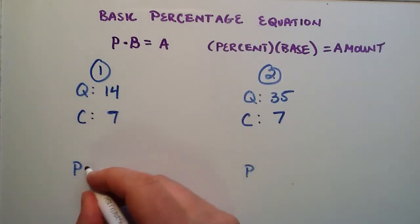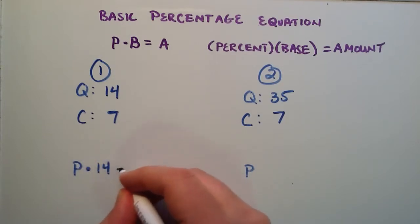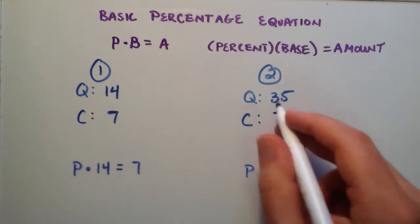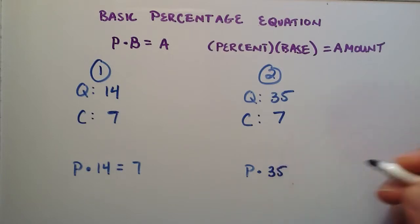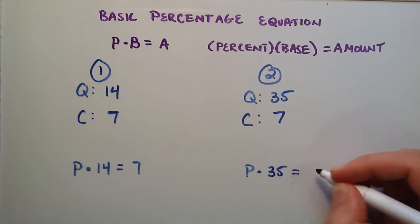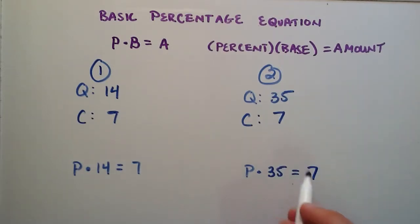For student one we're going to find the percentage of 14 questions that are complete, and we know that we've completed seven. For student two we're going to find the percentage of 35 questions that are complete, and he has completed seven.